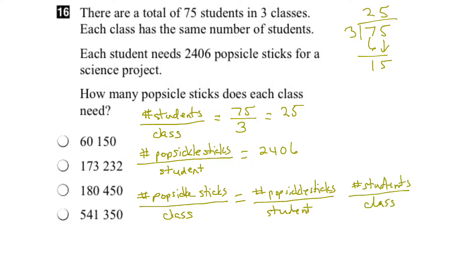and we multiply these two together, we can see that the students will cancel out, and we're left with the number of popsicle sticks per class, which is what we want to find out.